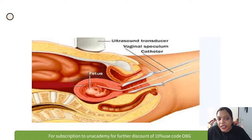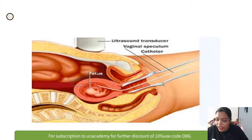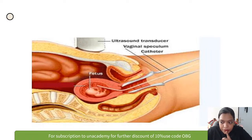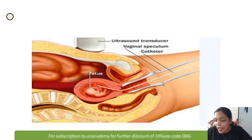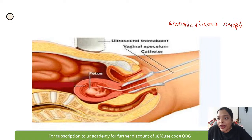The next image shows an ultrasound-guided transvaginal chorionic villus sampling. CVS is a confirmatory test for finding out fetal aneuploidies.